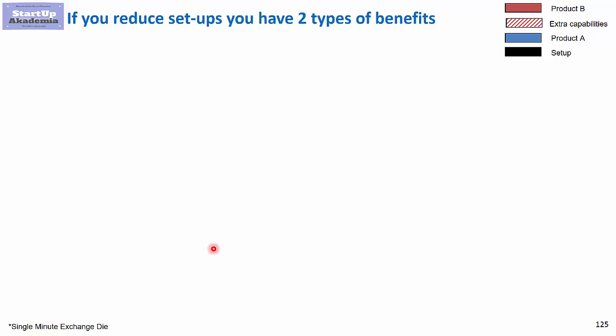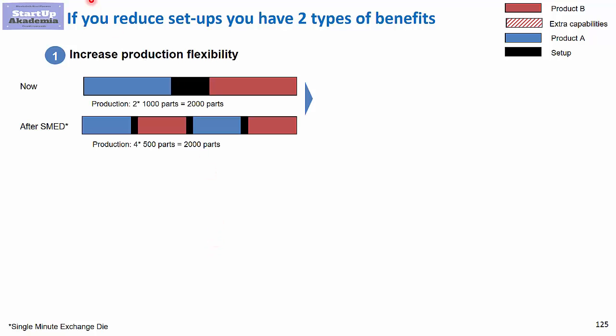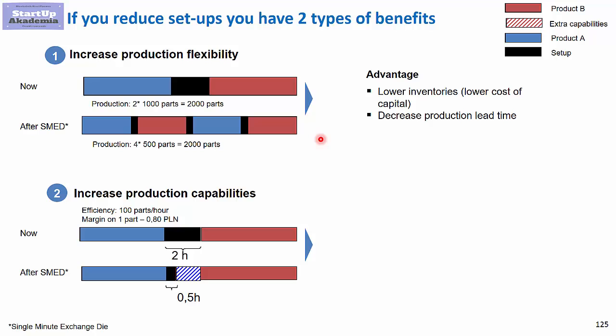Now there are two types of benefits you have from reducing setups. The first one has to do with the fact that once you reduce the setups, you have higher flexibility. So here I produced one batch of one good and then I had a long setup and then a second batch of the second good. This obviously means that I have a lot of inventory. If I reduce the setup, then I can do more setups and obviously have lower inventory and bigger variability of products.